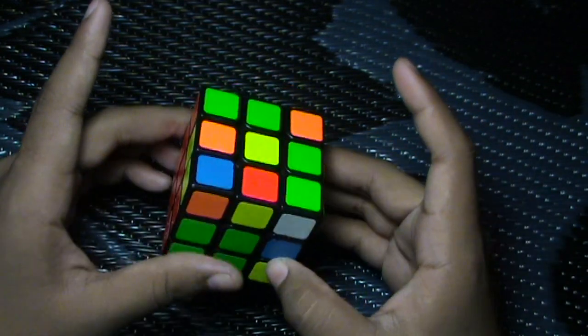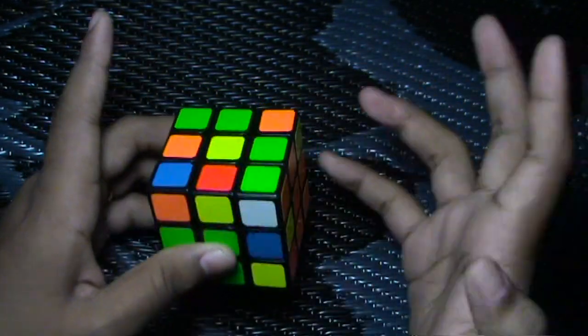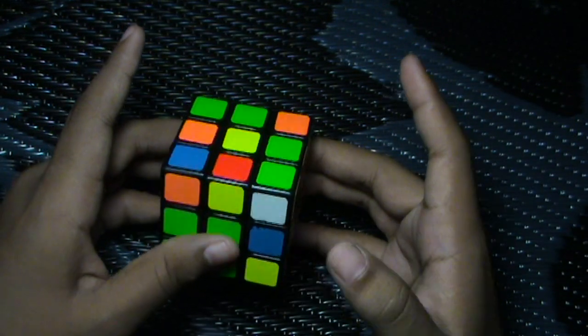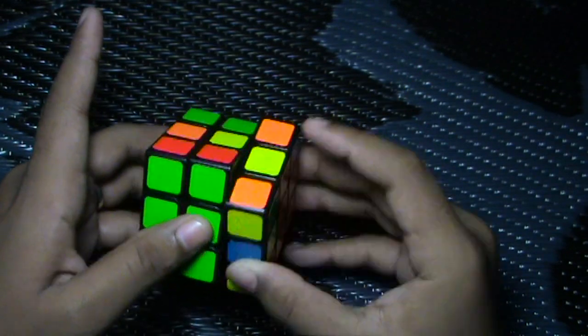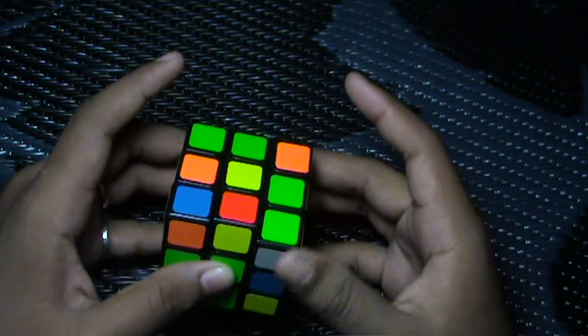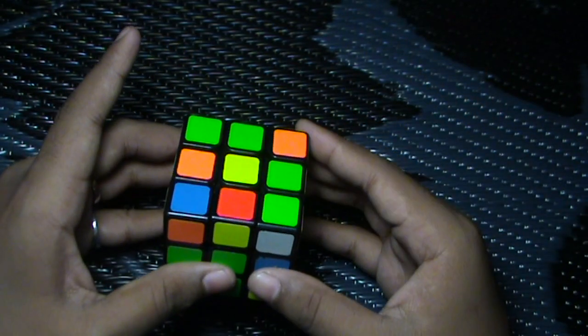So our first case is this where after you have created your F2L pair you are stuck with a dot case. What most people do when doing dot cases is just insert with a sledgehammer so that they can orient two of the edges, but I want my cross to be done.